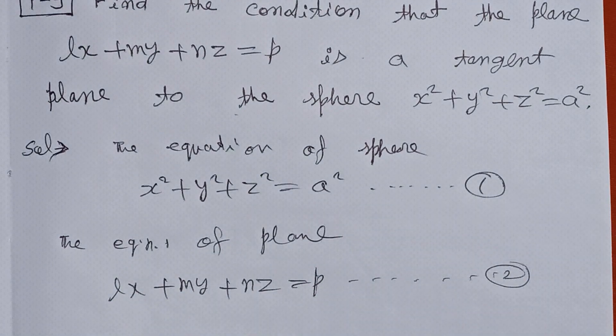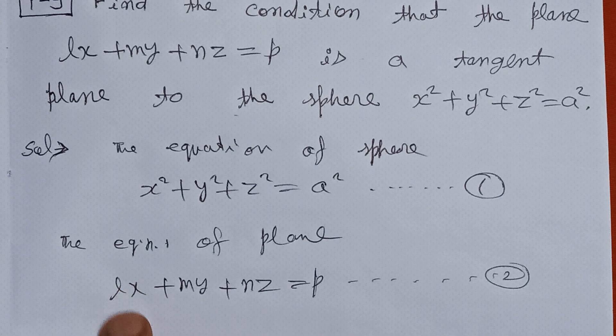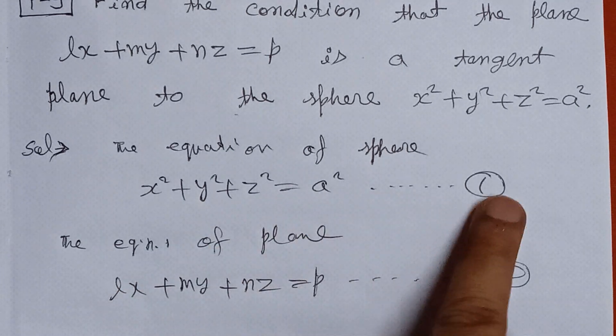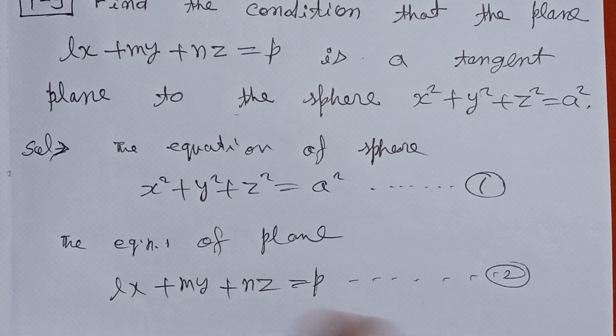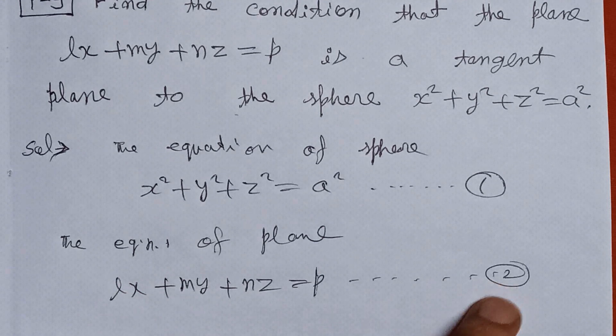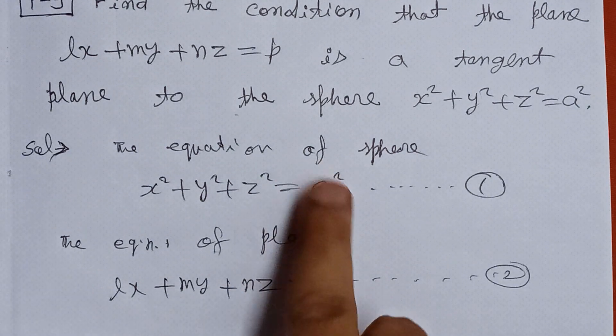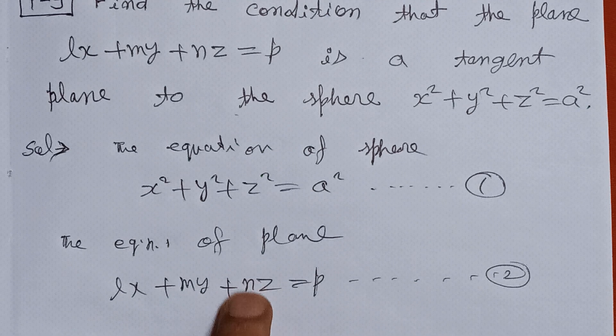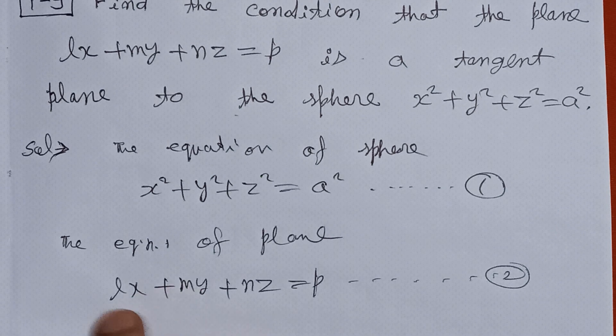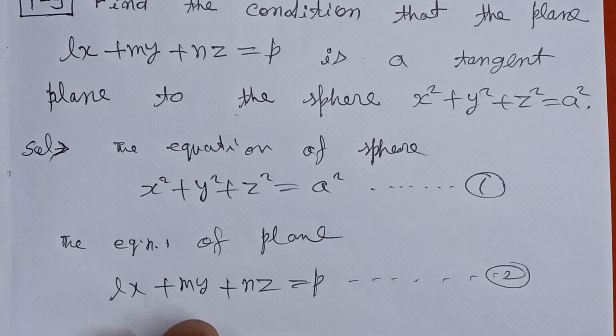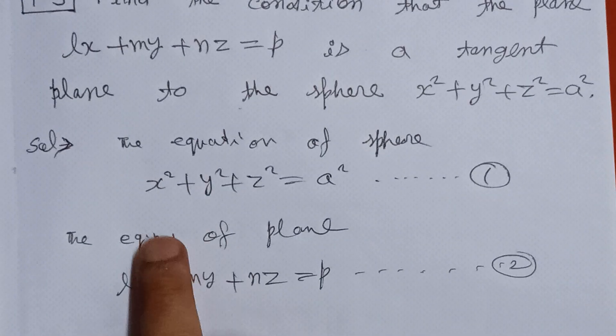We have to find the condition that this plane is tangent to the sphere. This condition is nothing but a relation between the coefficient of the sphere, which is A, and the coefficients of the tangent plane, which are L, M, N, and P. We have to find the relation between A, L, M, N, and P, which will be the required condition that this plane will be tangent to the sphere.